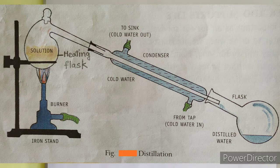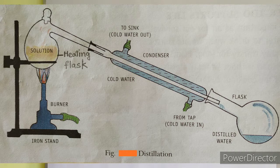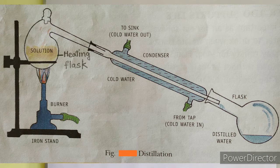So how does it happen? First, the solution in the heating flask is heated using the burner. On heating the solution, the water vapour enters the condenser, which is kept cool by cold water circulating around it. As you can see in the diagram, the cold water is supplied from the tap — cold water in — and the cold water out to the sink through another nozzle.